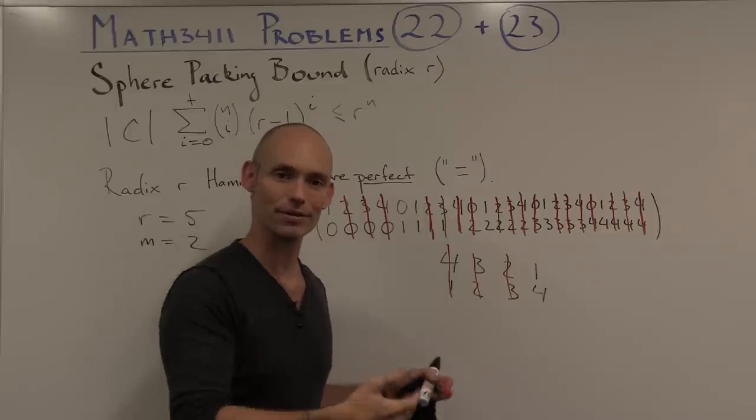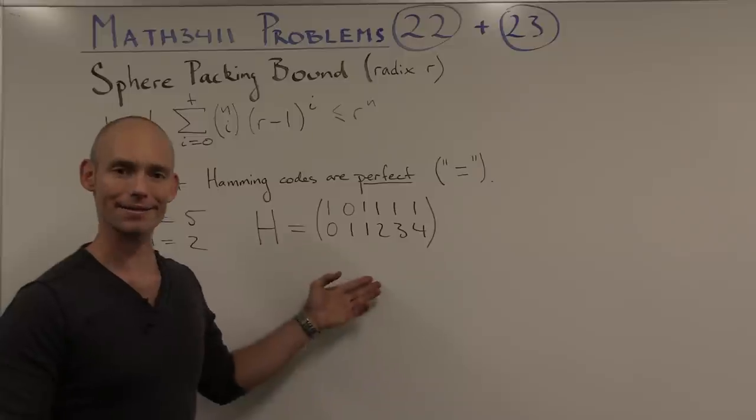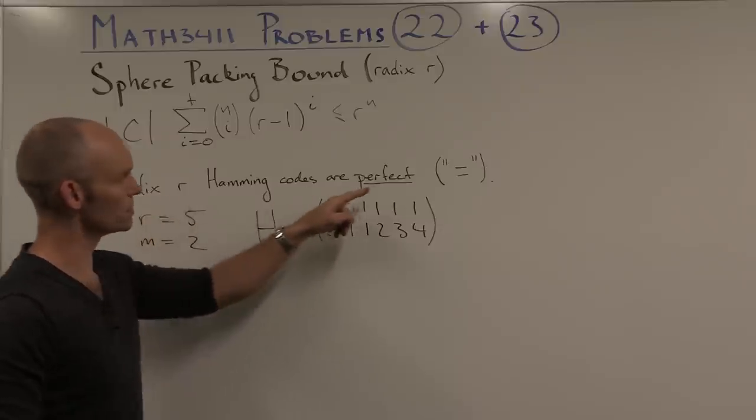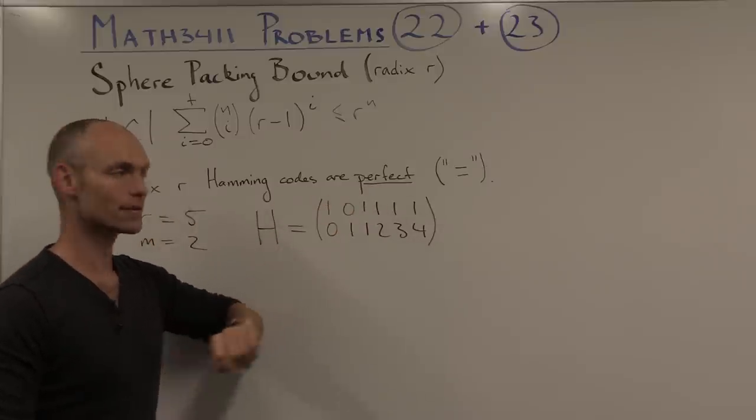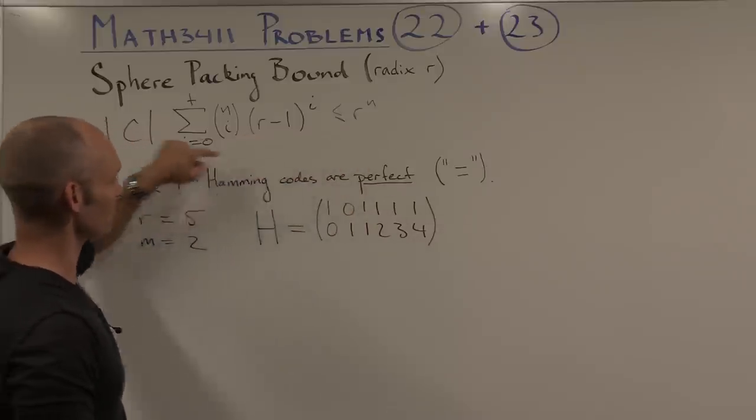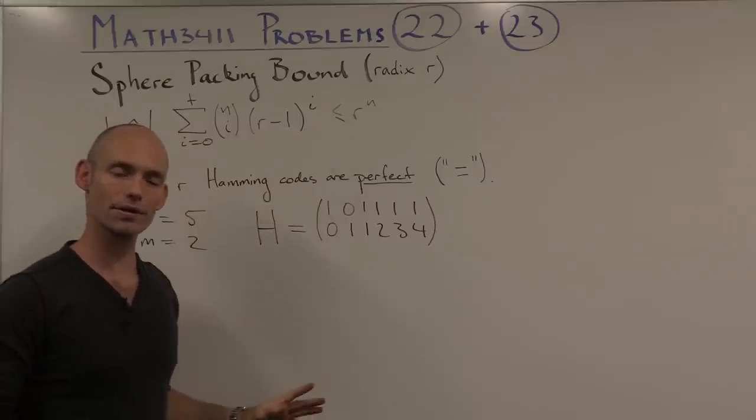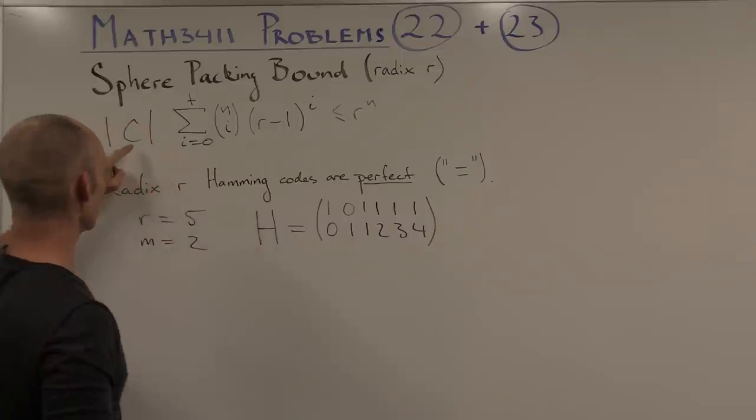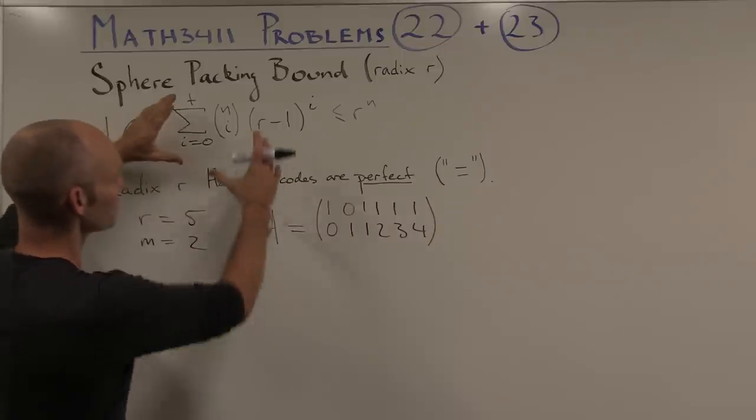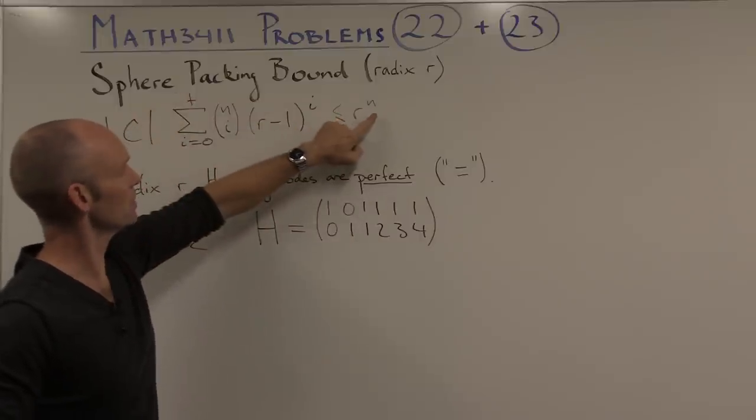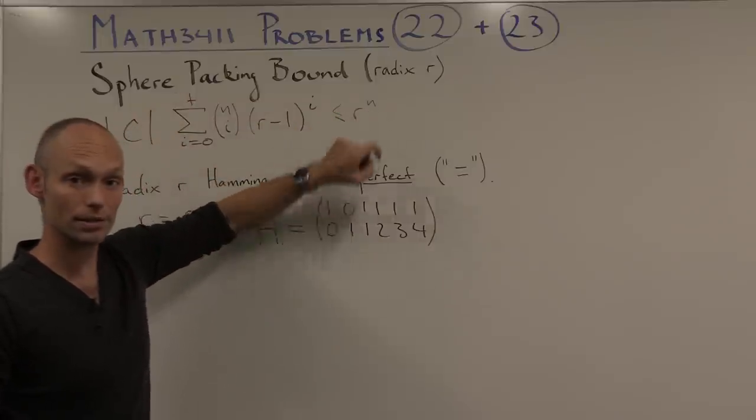Now we want to show that radix r Hamming codes are perfect, so they attain this bound. There's an equal sign in this inequality. In order to show that, we need to find out a couple of things. We need to know how big our radix r Hamming code is, what that sum is equal to, and in particular what the value of n is equal to.